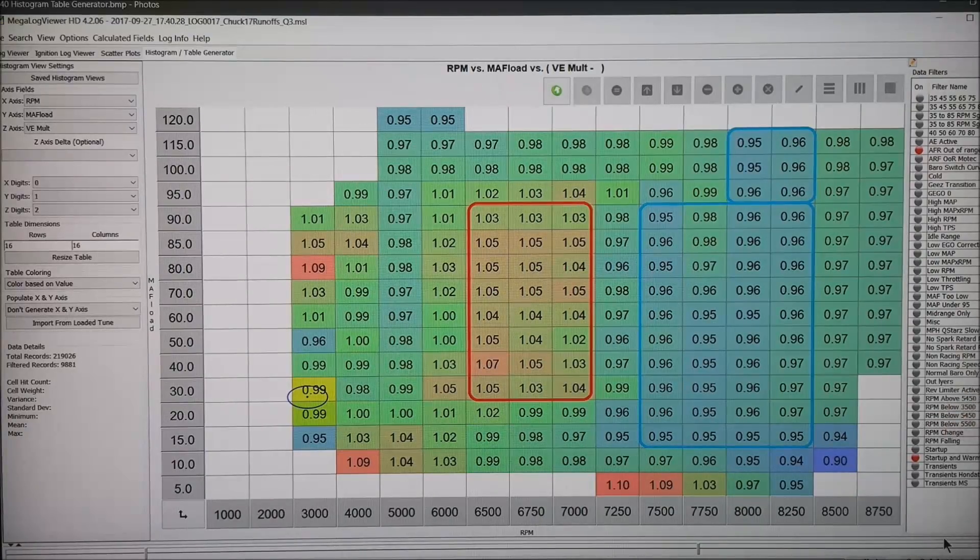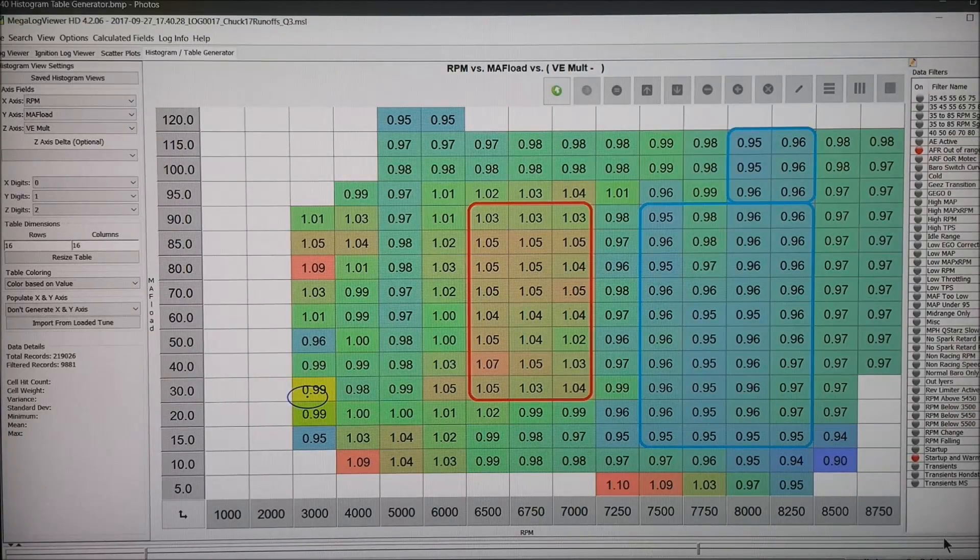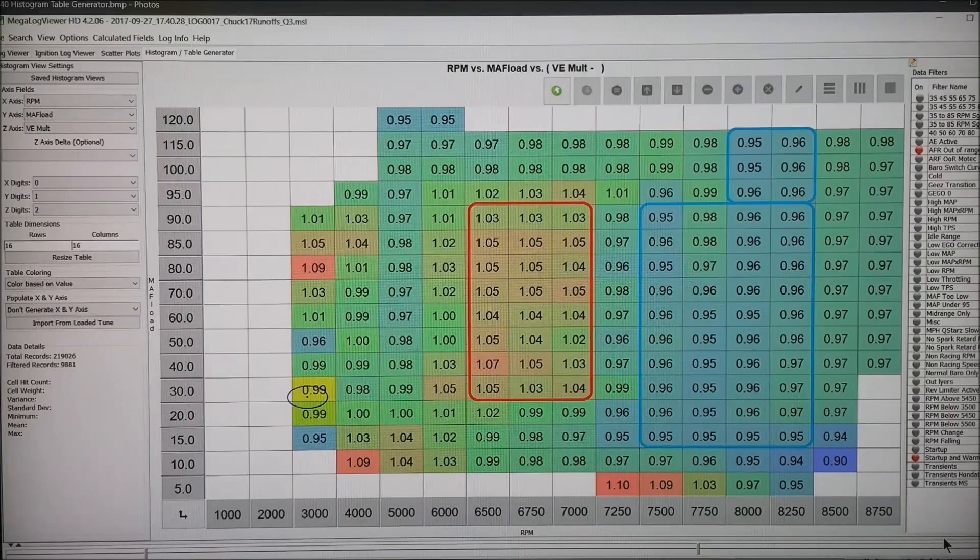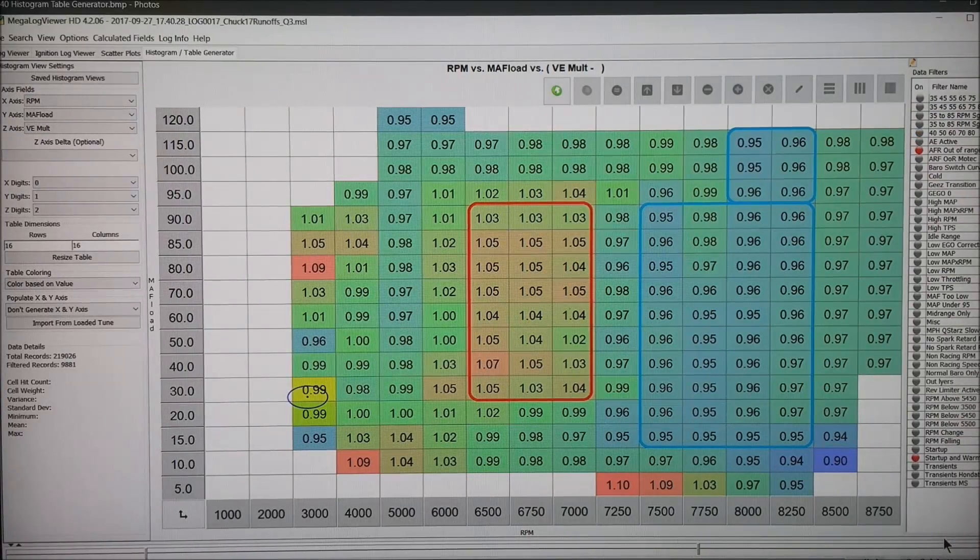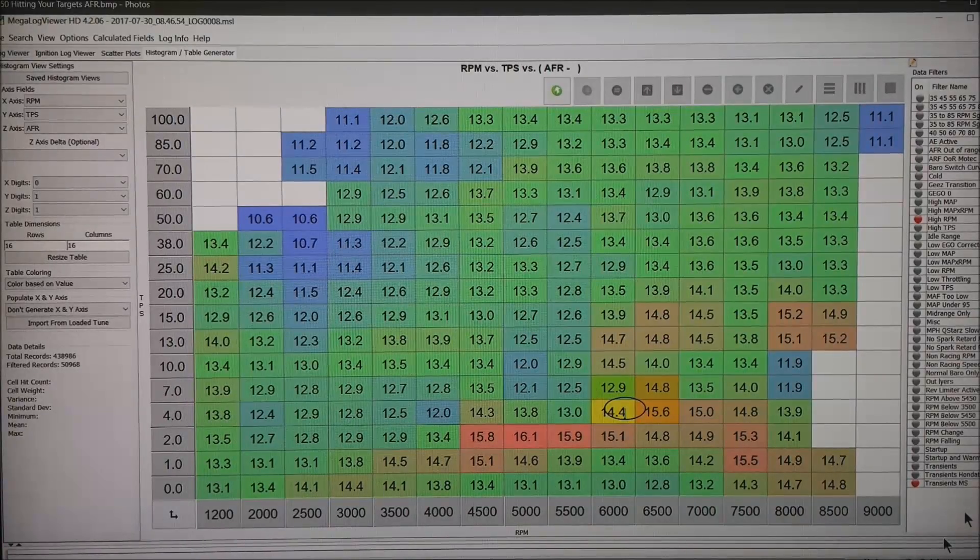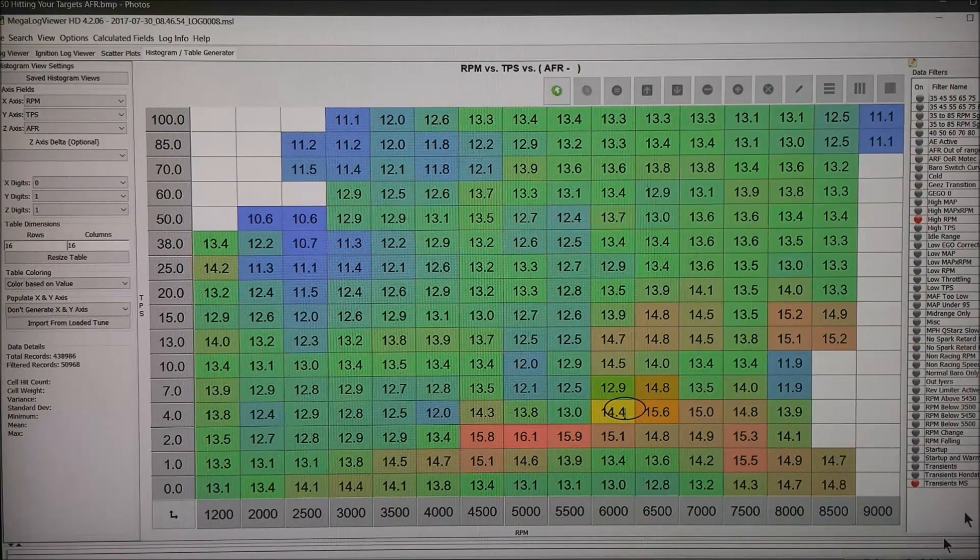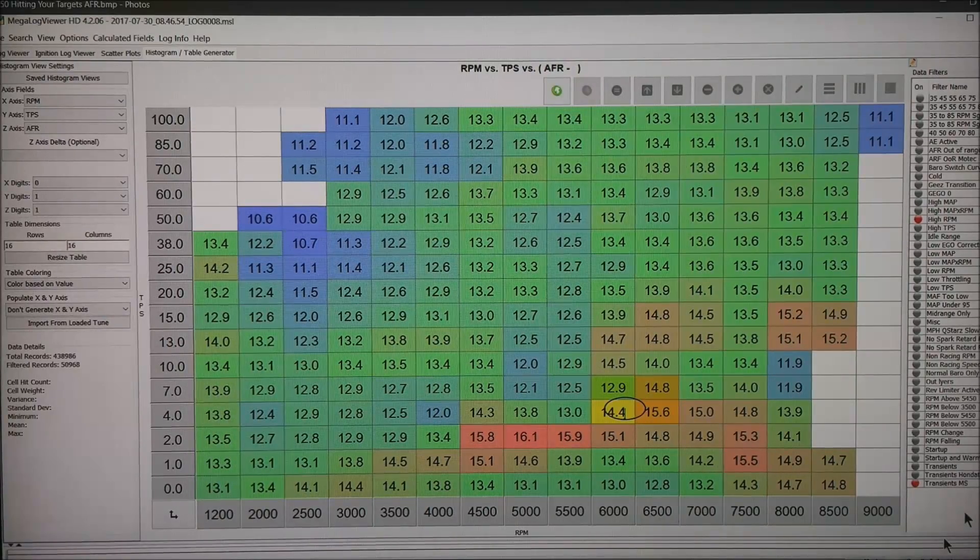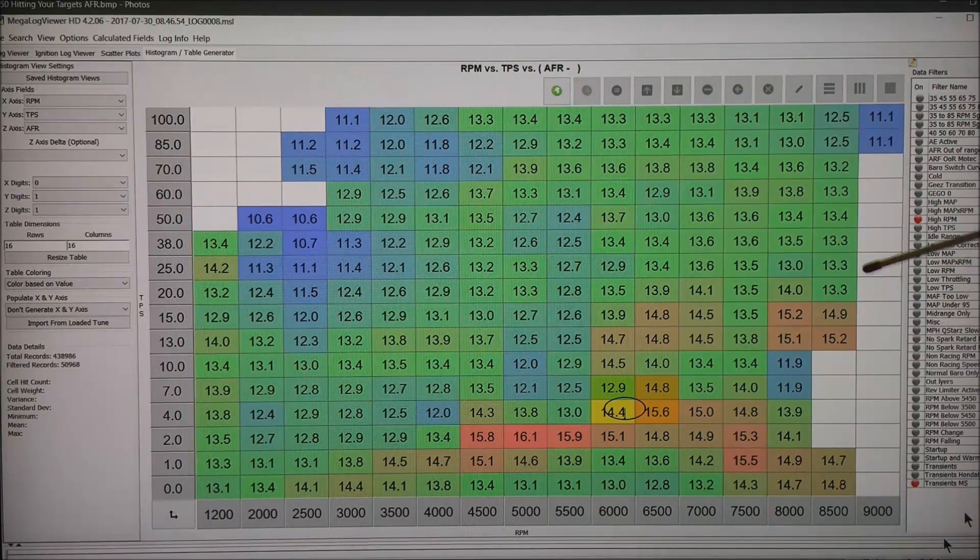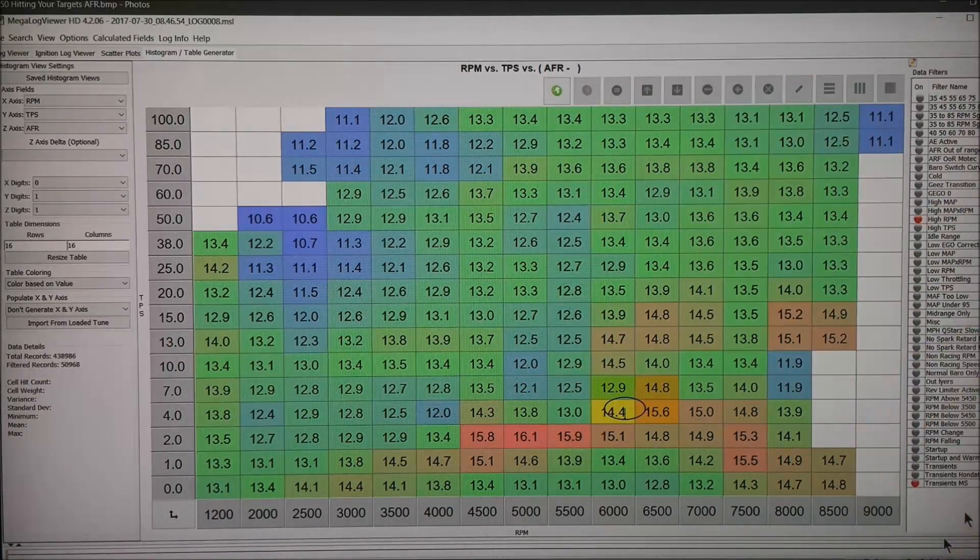Again I have thrown out start up and warm out and AFR out of range. But you can use any filter you want to throw out any data you want. Same thing goes for RPM vs TPS. Where RPM is along the bottom. TPS up the left side. And AFR out in the center.